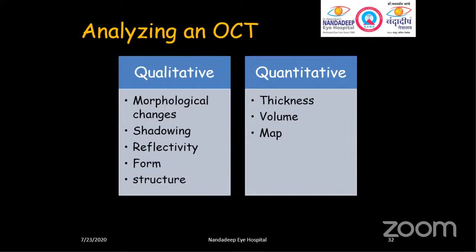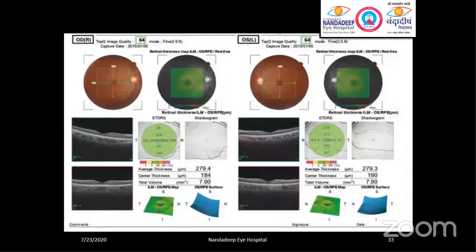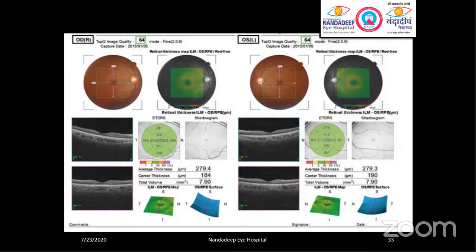This is a very important point: an OCT report can be analyzed both qualitatively and quantitatively. In this particular report, we can see the scan quality, detect whether there is shadowing or reflectivity, and assess the thickness and volume of the entire scan profile. We can see the measurements here. Through this, we can measure what is the subfoveal thickness and what is the foveal thickness. OCT provides a very good role in analyzing the report both qualitatively and quantitatively.